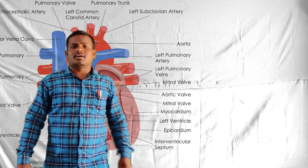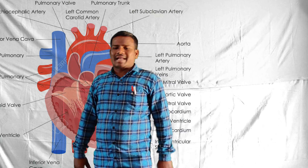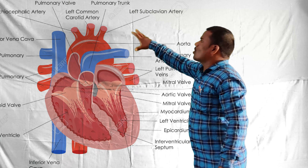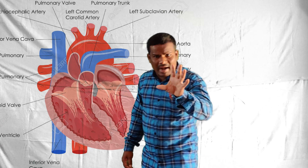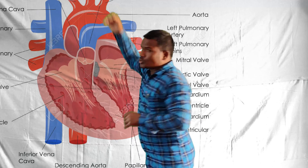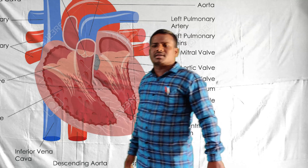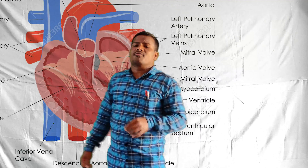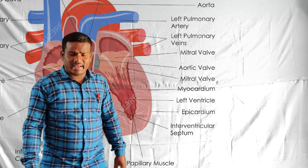Now let's discuss the internal features of the human heart with the help of a diagram. From the diagram we find out that the human heart is divided into four chambers by grooves. The upper chambers - the upper part of the heart - are called atria, and the lower chambers are called ventricles.